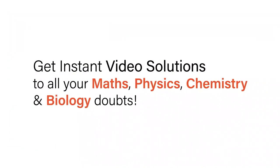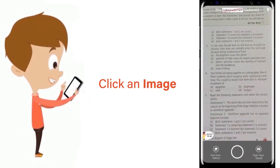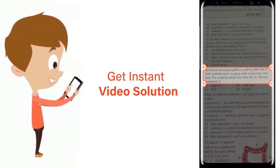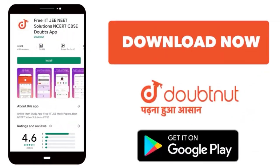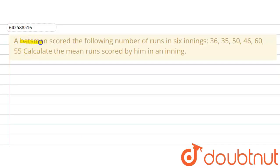With Doubtnet, get instant video solutions to all your math, physics, chemistry, and biology doubts. Just click the image of the question, crop the question, and get instant video solution. Download Doubtnet app today. The given question says that a batsman scored the following number of runs in six innings.